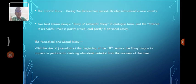The types of essays include the critical essay. During the Renaissance and Restoration period, Dryden introduced a new variety. The two best-known essays are Essays of Dramatic Poesy in dialogue form and the Preface to Fables, which is partly critical and partly personal. The periodical and social essay emerged with the rise of journalism at the beginning of the 18th century, when essays began to appear in periodicals.